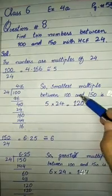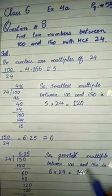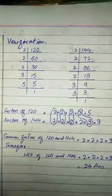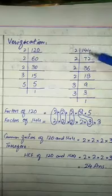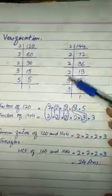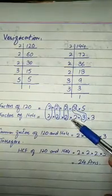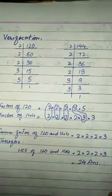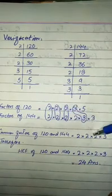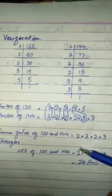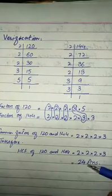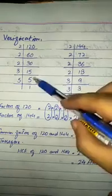So 120 is one number and 144 is our second number. For verification, we find their prime factors and list the common ones. The common prime factors are 2 times 2 times 2 times 3. That gives us 2 times 2 equals 4, times 2 equals 8, times 3 equals 24. This confirms our HCF is indeed 24.